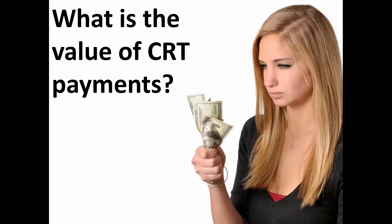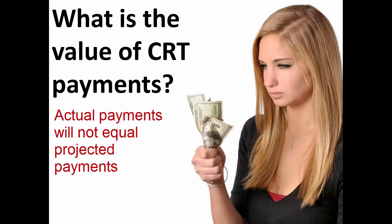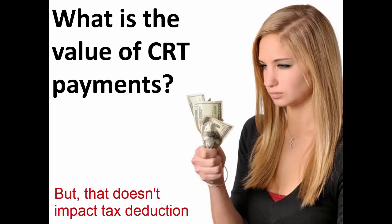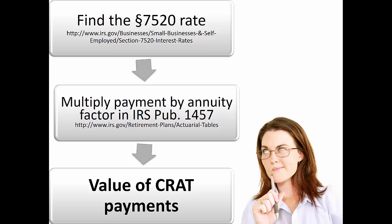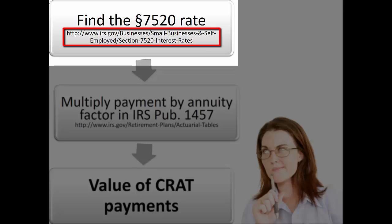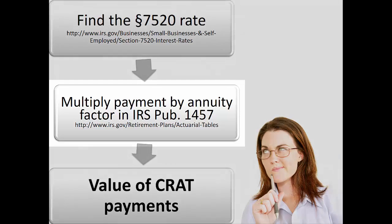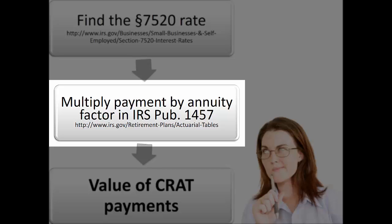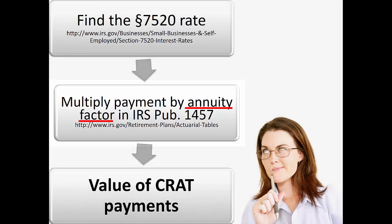Of course, if the annuitant lives longer or shorter than expected, or the investment returns differ from the initial Section 7520 interest rate, the actual payments to the annuitant may vary widely. The ultimate reality does not affect the valuation of the payments for purposes of the charitable income tax deduction. The process of valuing payments from a charitable remainder annuity trust is identical to the process for valuing payments from a charitable gift annuity: find the Section 7520 rate at the IRS website, then use the 1-life or 2-life annuity tables to identify the appropriate annuity factor.